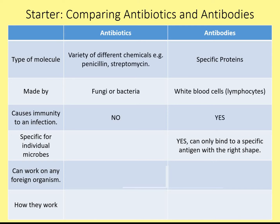You don't get immunity if you're just injected with antibodies, so as long as your own immune system has been stimulated, then yes you will get immunity. Are antibiotics specific? No — they tend to work on a number of different bacteria depending on the type. Antibodies, however, are specific for a particular antigen that has the right shape to match up to. The antibody and the antigen have to be complementary shapes and bind to each other, which is why different microbes need different antibodies produced against them because they have differently shaped antigens.